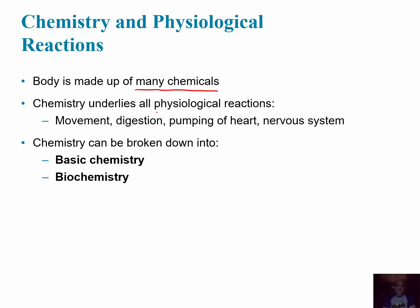We cannot understand physiology without understanding what's going on at the cellular level — movement, digestion, muscles contracting in the heart to pump blood through the body, or nervous impulses. Being able to understand those requires understanding the chemistry and physiology that occurs at that level. We're going to break down our chapter into two parts. Part one will cover basic chemistry, which you might get in a general chemistry course. The chemistry that occurs within cells is biochemistry, and that would be part two.